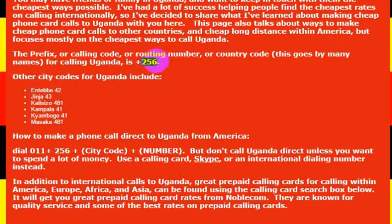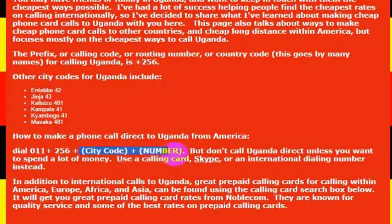The country code for Uganda is 256. To make an international phone call to Uganda from the United States, I would dial 011 — that is the international dialing code — and then I would dial 256, which is the country code, then I would dial whatever phone number I wanted to dial. Again, the country code for Uganda is 256.